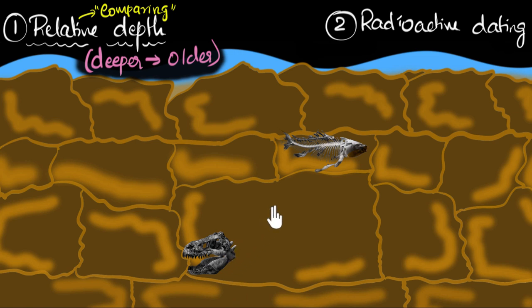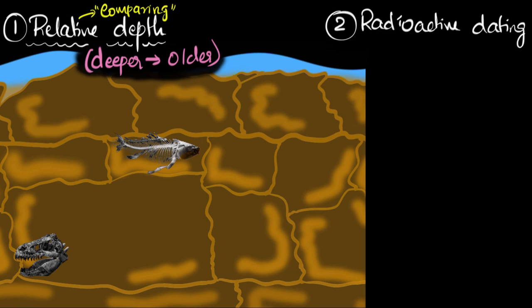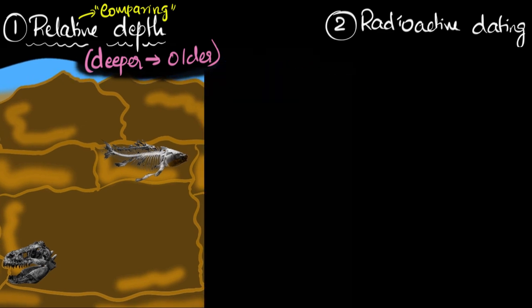But this method is only useful if you already know the age of one of the fossils. For example, if you knew how old this fossil was, then you can probably estimate how much older this one is. But what would you do if you didn't know the age of any fossils? Then how do you figure out the date? Well, that's where we go to the second method, radioactive dating. So what is that? For that, let me make some space to the right.